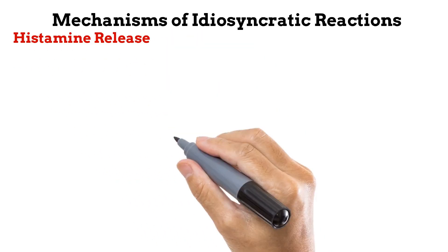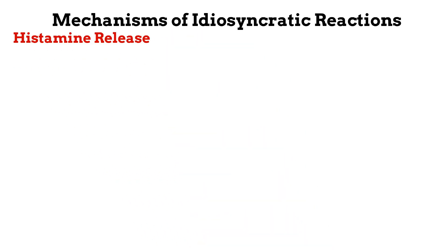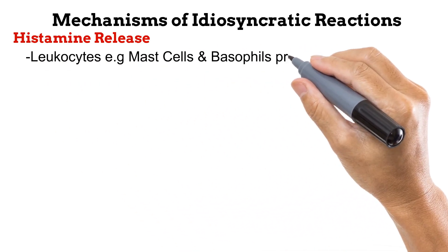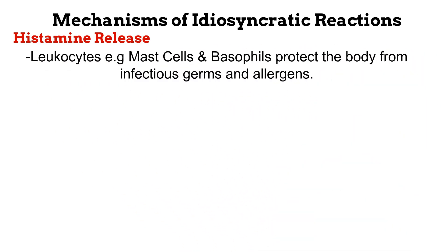First is histamine release. Our blood contains something called leukocytes, or white blood cells as they are more commonly known. They help to protect the body from infections. Types of leukocytes in the blood include mast cells and basophils. These cells are found in many areas of the body — the skin, intestines, heart, respiratory system, and so on. They protect the body from germs and allergens by releasing chemicals that would help to destroy these germs and allergens.